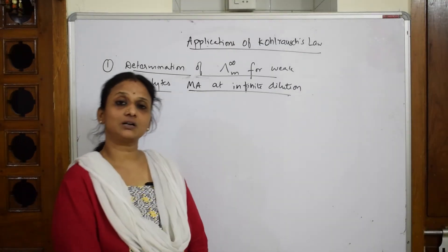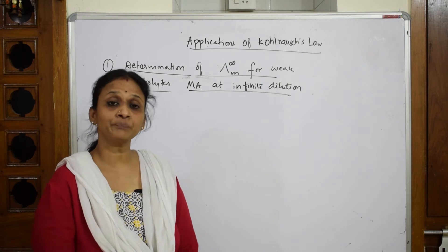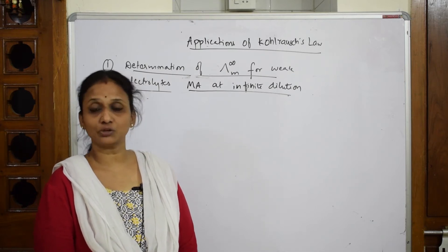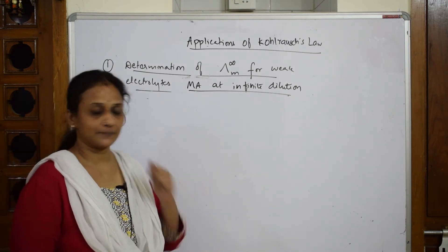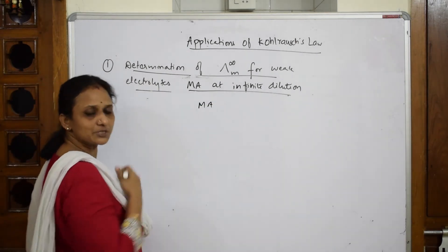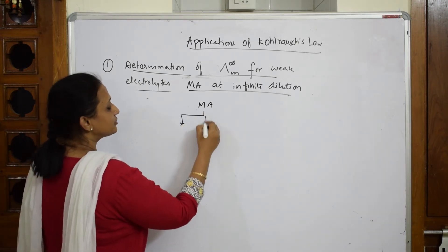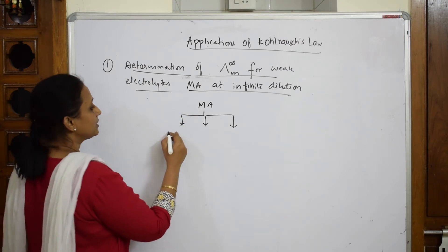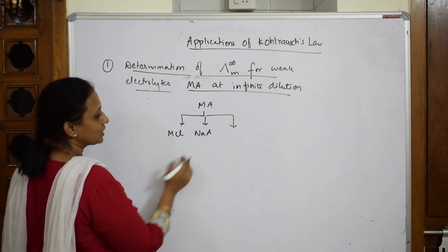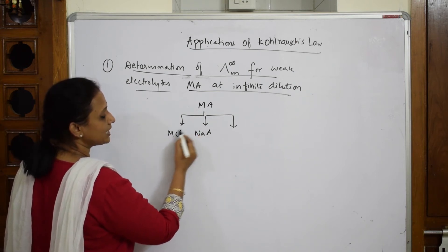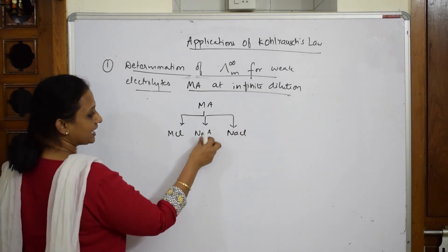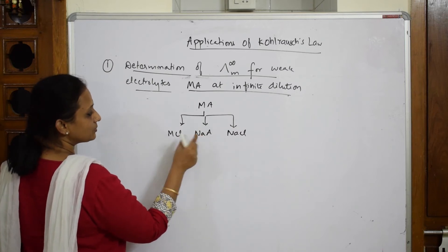In numerical problems, if no specific weak electrolyte is given, say you need to find molar conductivity at infinite dilution for a weak electrolyte MA, first consider three related salts: MCl, NaA, and NaCl. This combination is chosen because subtracting NaCl from the sum of MCl and NaA will leave only MA, which is what we want to find.